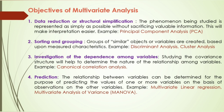The fourth objective is prediction — the relationship between variables can be determined for the purpose of predicting the values of one or more variables based on observations of other variables. In univariate analysis we use simple linear regression based on one variate, while multivariate linear regression handles more than two regressor variables. Similarly, MANOVA — multivariate analysis of variance — is used.